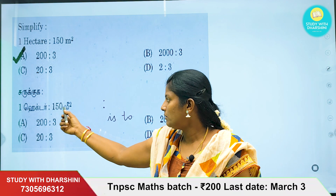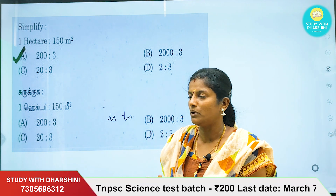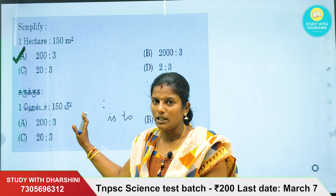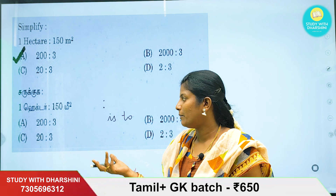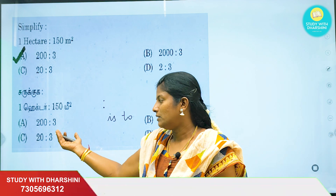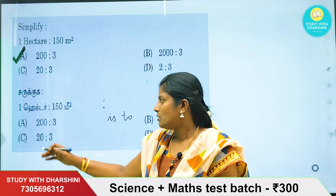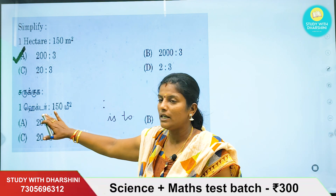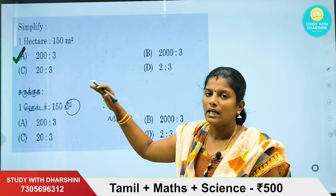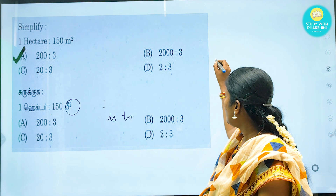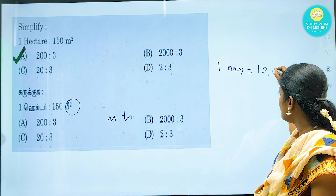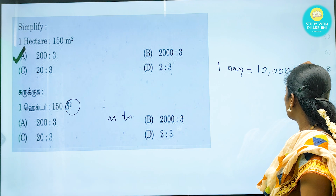Hectare is a large unit. Meter square is a small unit. In this comparison, we can compare the other units. 1 hectare equals 10,000 meters square.